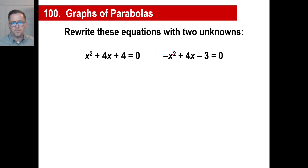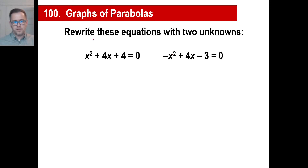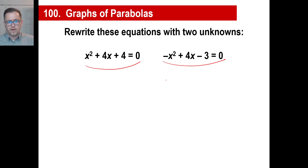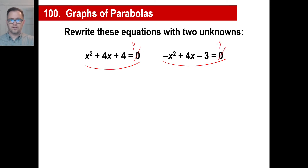However, we can go ahead and write quadratic equations with two unknowns. The way we do that is to just replace the zero with a y — we can just stick a y here. Or you can also think of this as f of x. Either one of those is fine.